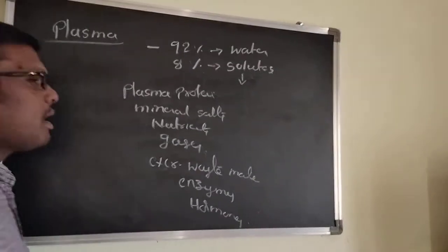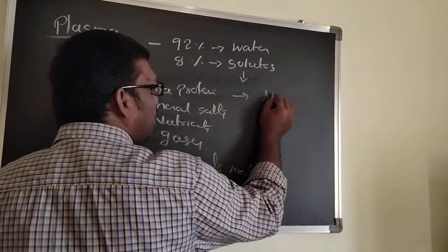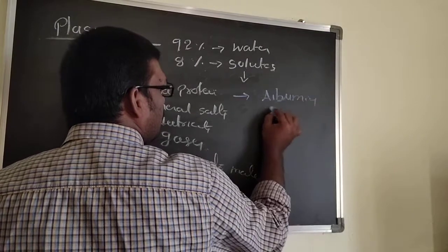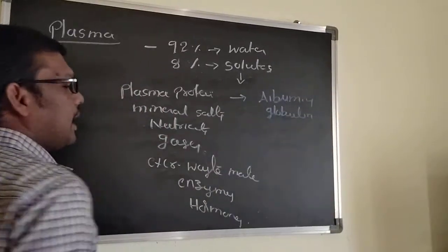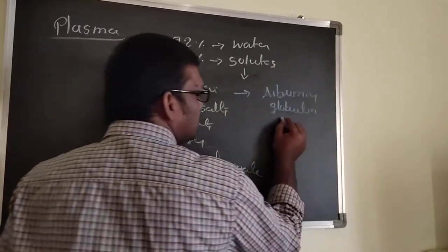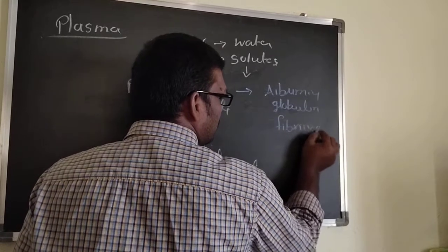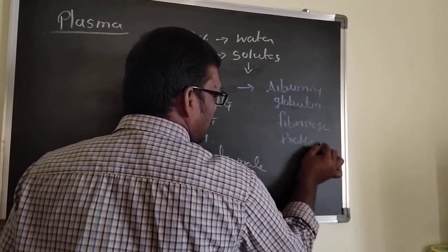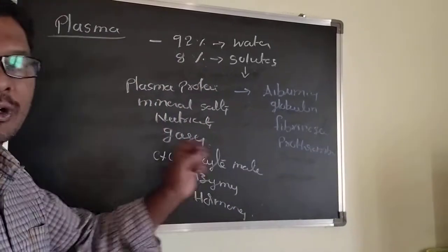The plasma proteins present are albumins, globulins, and blood clotting proteins — that is fibrinogen and prothrombin. Fibrinogen and prothrombin are under the blood clotting factors.